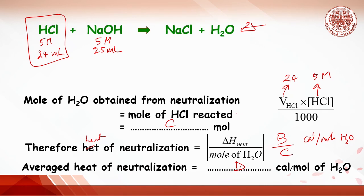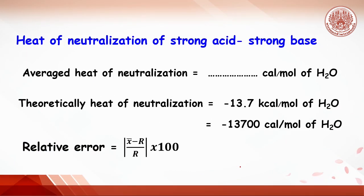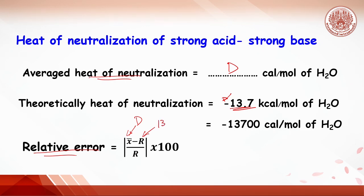The average heat of neutralization value is D. The theoretical heat of neutralization is 13.7 kilocalories per mole of water. From the experiment, the heat of neutralization is calculated to get D calories per mole of water. The relative error can then be calculated, where D is the experimental value and 13.7 kilocalories per mole is the theoretical value.